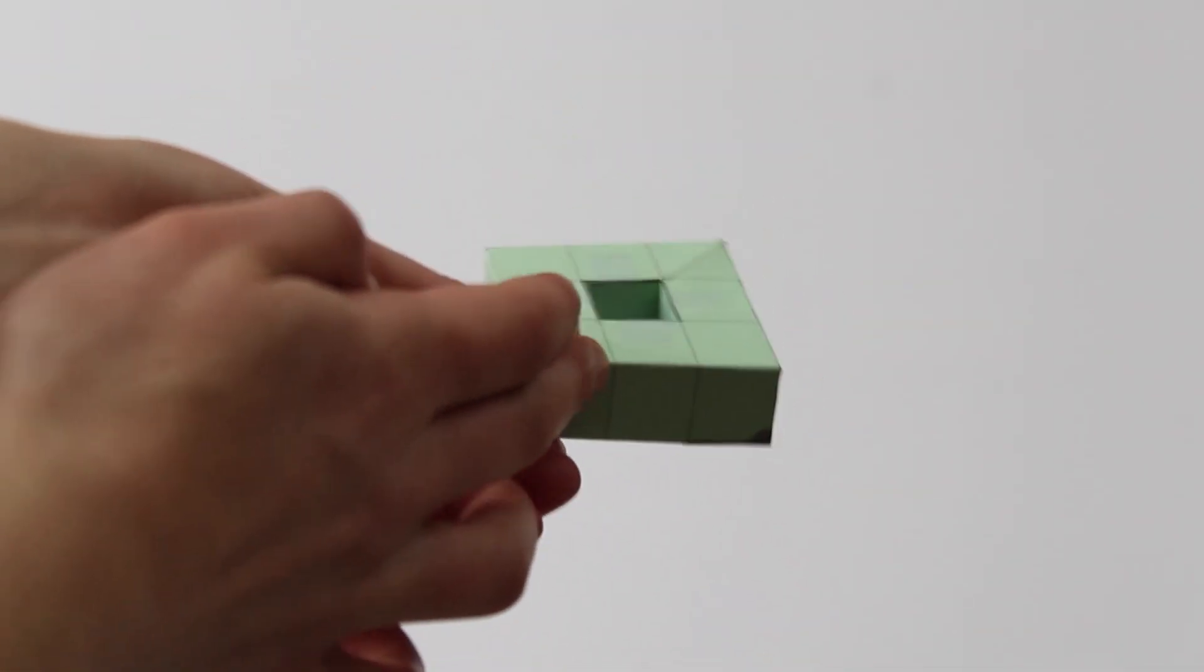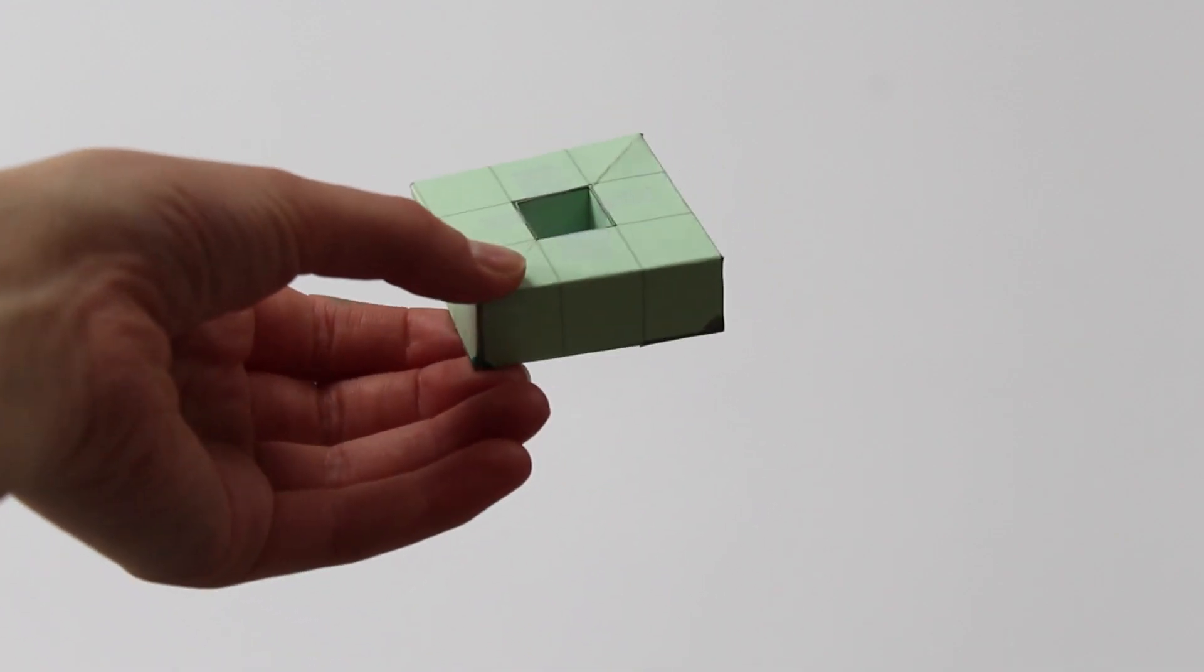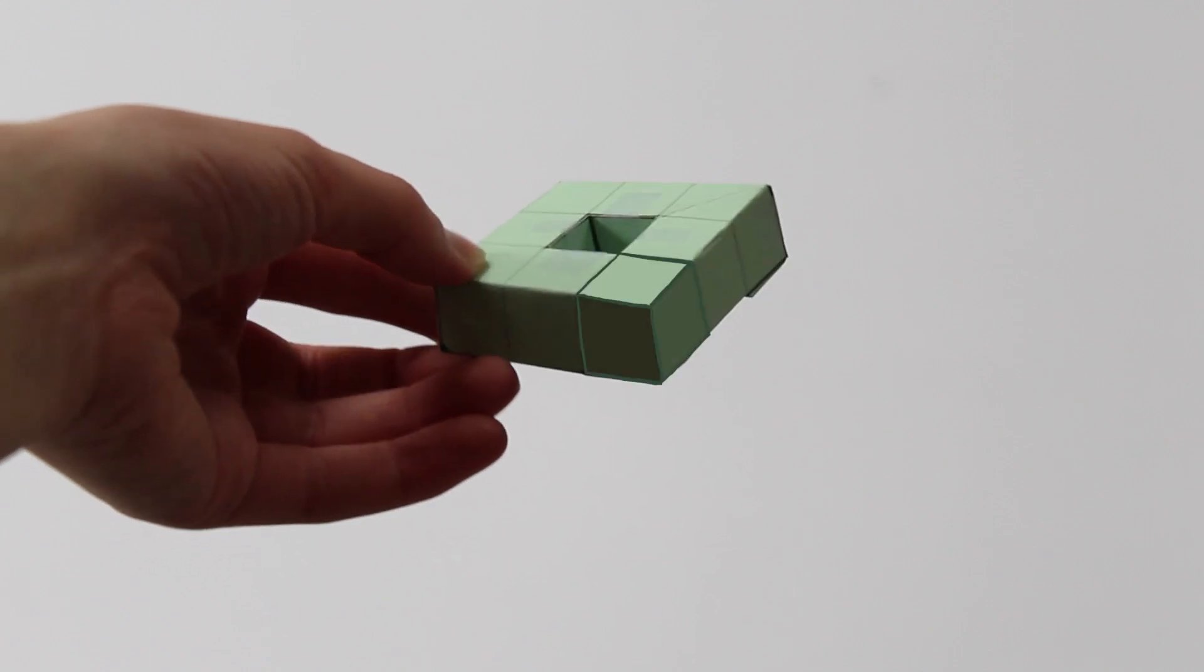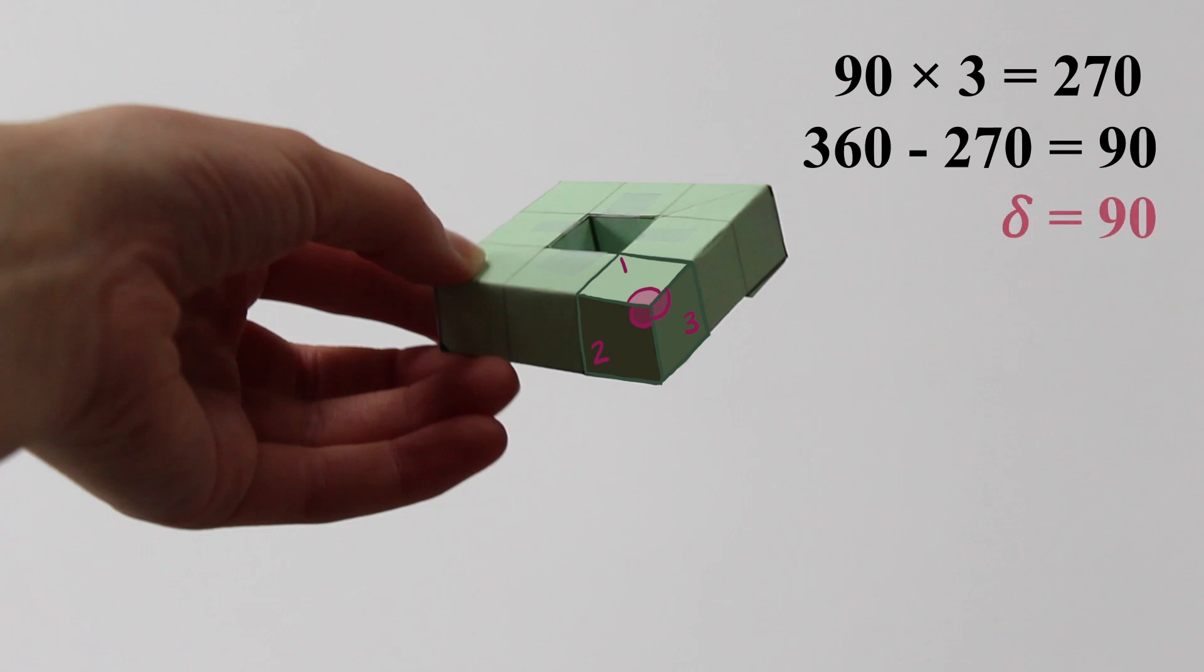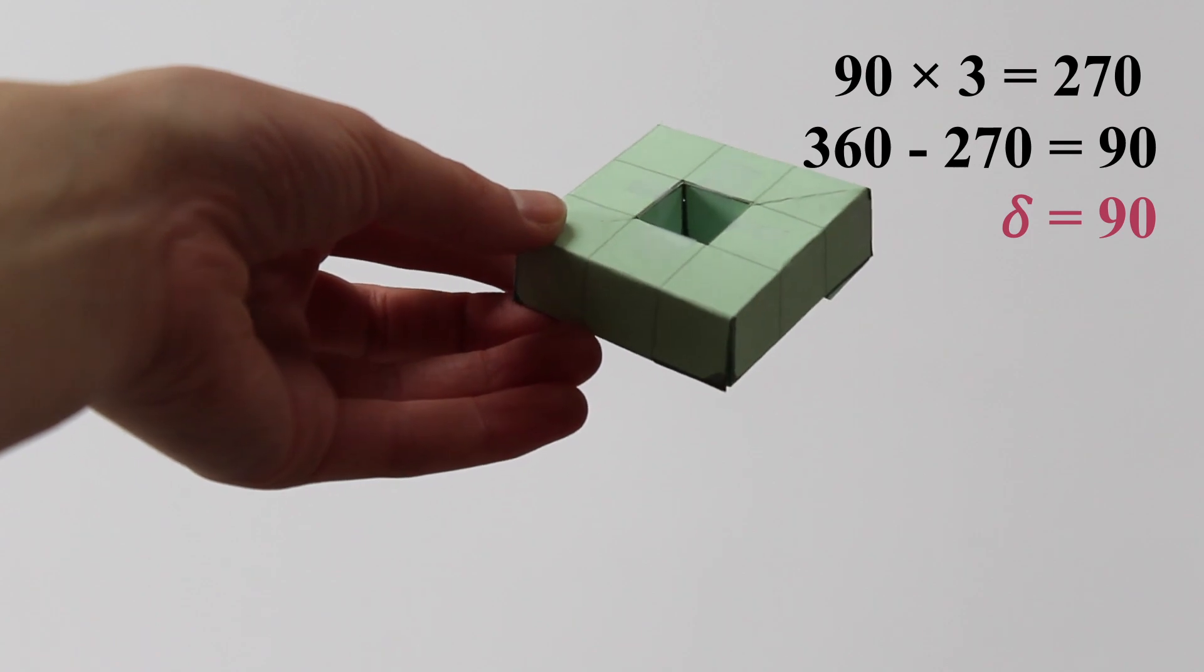It has three different types of vertices, with different angle deficiencies. At the outside corner vertices, there are three squares meeting in a vertex. Around each of these vertices, there is an angle of 90 times 3, which is 270 degrees. And 360 minus 270 equals 90. So these vertices have an angle deficiency of 90 degrees, just like we saw on the cube.